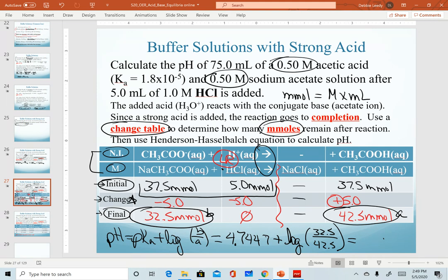For this equation, we can continue to use millimoles. On the next slide, I will explain why. Once we added a little bit of strong acid, we get a final pH of 4.62. Notice that our pH decreased a little bit. Remember, our initial buffer was a pH of 4.74. So our pH has decreased a little bit with the addition of a little bit of acid.